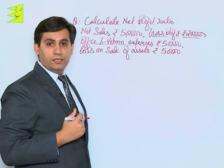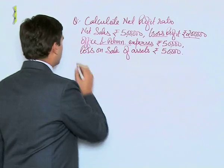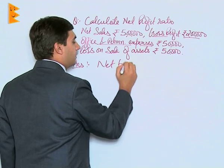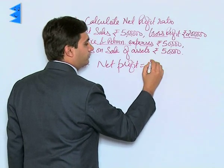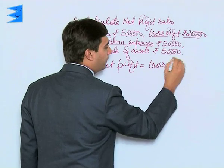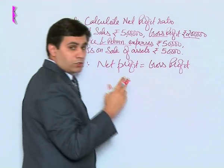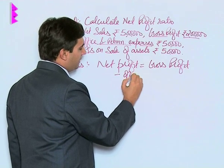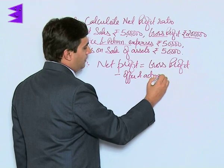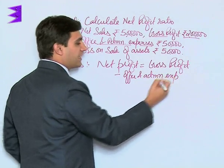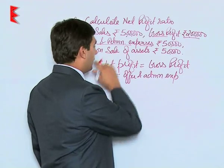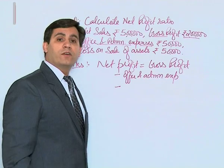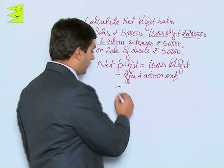So first of all, what we will do is try and calculate net profit. Net profit is equal to gross profit minus office and administration expenses, as this represents operating expenses, minus non-operating expenses. In this case, loss on sale of asset is a non-operating expense.